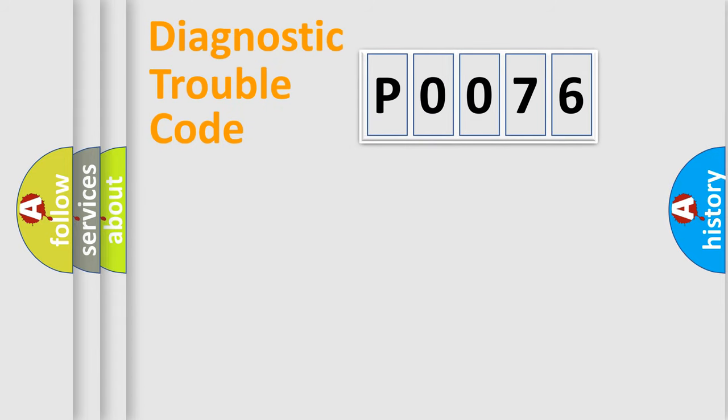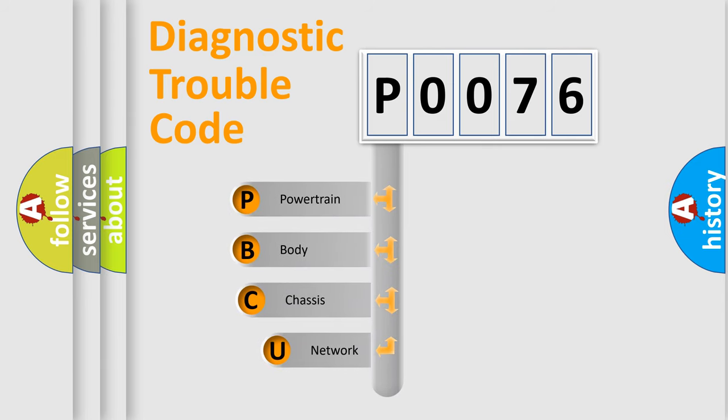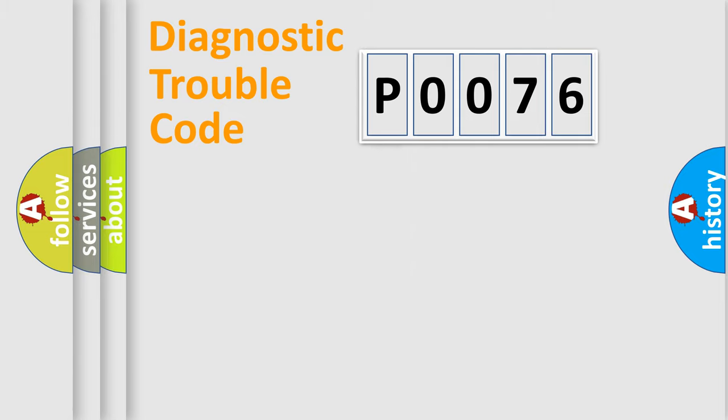First, let's look at the history of diagnostic fault code composition according to the OBD2 protocol. We divide the electric system of an automobile into four basic units: powertrain, body, chassis, and network.